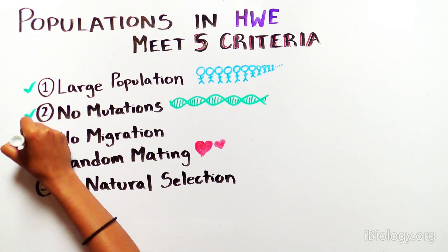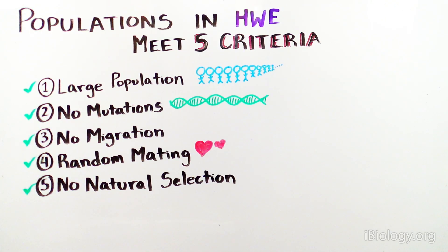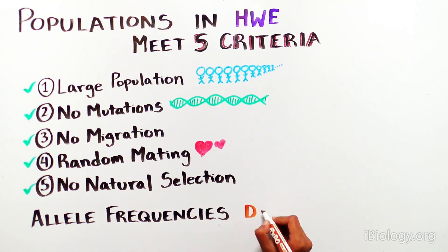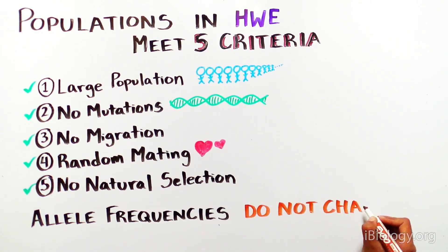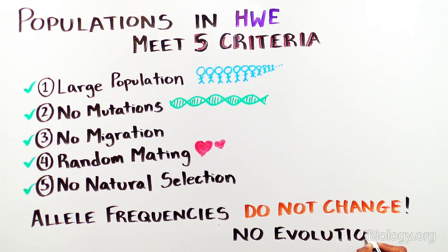If these five criteria are met, the population is in Hardy-Weinberg equilibrium, evolution is not occurring at that locus, and the allele frequencies will remain the same over time. If you calculate allele frequencies and find that they have changed over time, you can say that the population is not in Hardy-Weinberg equilibrium, meaning that it has evolved.